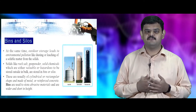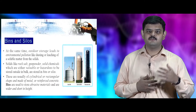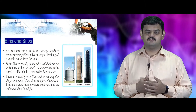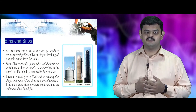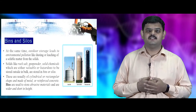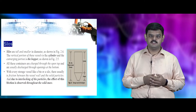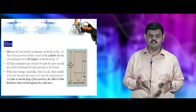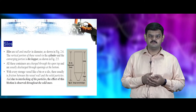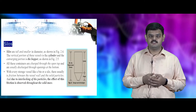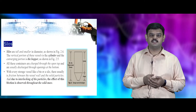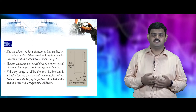Storing materials in an open yard leads to environmental pollution such as dusting and leaching. To prevent this, chemicals and hazardous materials must be stored in bins or silos. Bins are storage devices having the shortest height and the largest diameter. Silos are storage devices having the smallest diameter and the greatest height. Non-cohesive materials must be used for storage inside silos.